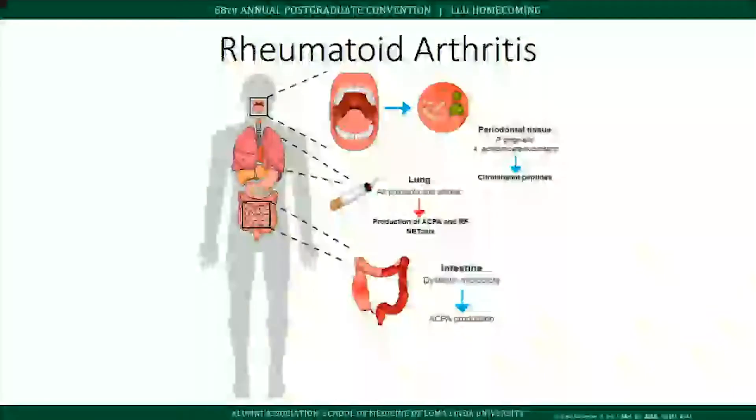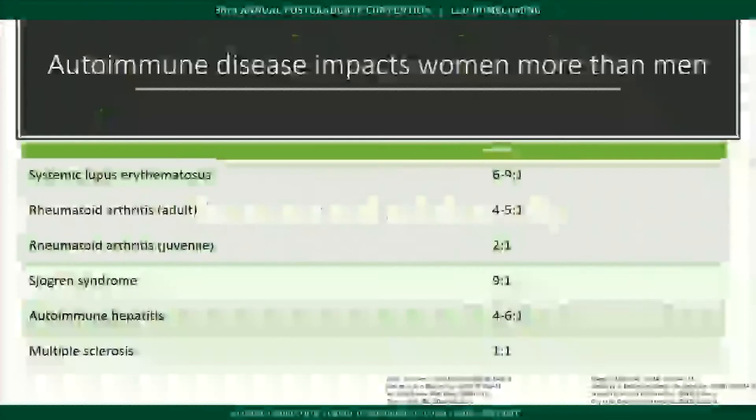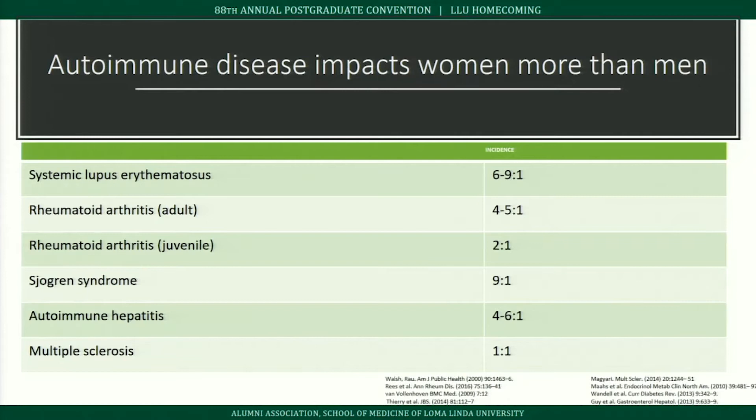In rheumatoid arthritis, gingivitis has been associated with citrullination of arginine peptides, leading to ACPA antibody formation — the anti-CCP antibody seen in RA. Similarly, smoking triggers ACPA production in the lungs, which then spreads to articular sites and triggers RA.